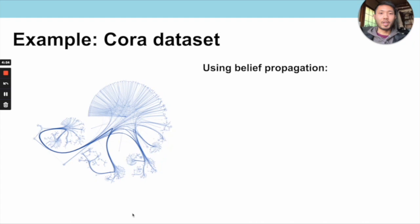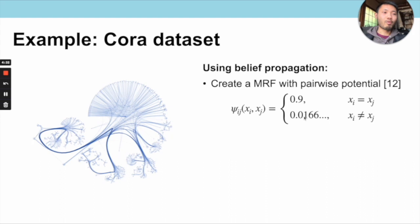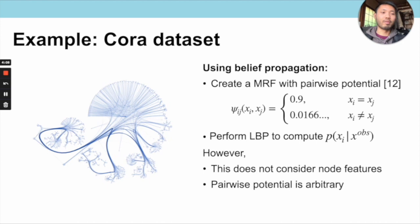We can also consider using belief propagation, modelling the citation network as a Markov random field with pairwise potential assigning 0.9 when two neighboring nodes are of the same class and 0.0166 otherwise. Loopy belief propagation then computes marginal probabilities of unobserved nodes given observed nodes. While this method explicitly accounts for relational information, it does not consider node features, and the choice of pairwise potential is mostly heuristic and may not accurately reflect the actual relation between neighboring nodes.